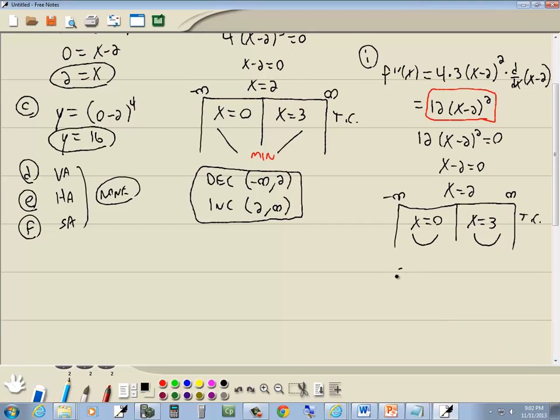So for concavity, it's going to be concave up from negative infinity to 2, and then it's going to be concave up from 2 to the positive infinity. POIs, our point of inflections is where the concavity changes. Since the concavity doesn't change, there are no POIs.